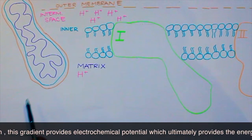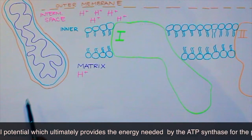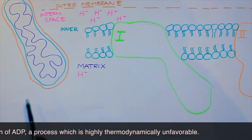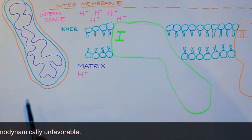This gradient provides electrochemical potential, which ultimately provides the energy needed by the ATP synthase for the phosphorylation of ADP, a process which is highly thermodynamically unfavorable.